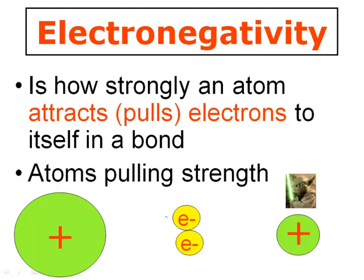A good definition for electronegativity is how strongly an atom is going to attract or pull electrons to itself in a chemical bond — either an ionic bond or a covalent bond. Electronegativity is simply the strength of an atom's pull on a shared pair of electrons. These electrons can either be shared evenly, shared unevenly, or actually taken. The more electronegative element will pull the electrons towards itself, so they will drift towards the more electronegative element.